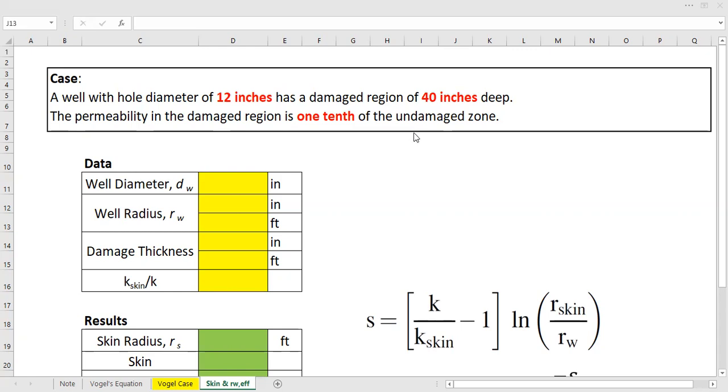Okay, so let's go ahead. First we list down the data we have. Well diameter of 12 inches, and we need to calculate the radius from the diameter. And of course the radius is 12 divided by 2.